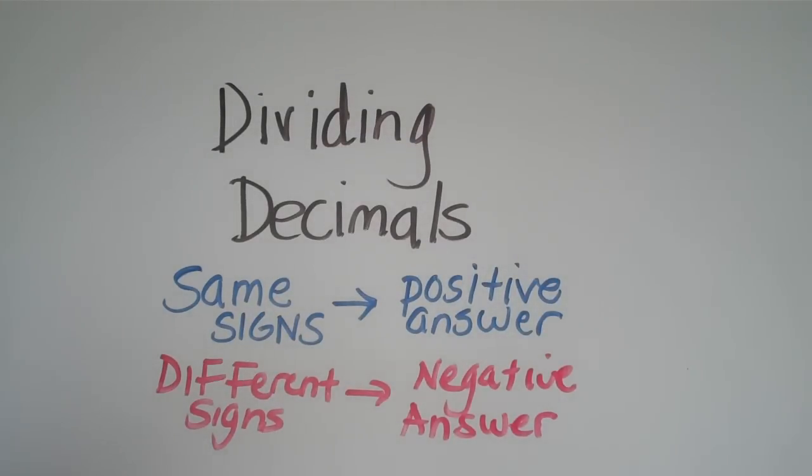Let's talk about dividing decimals. Just like with multiplying decimals, the rules for multiplication and division are the same. If you have the same signs, you will get a positive answer. If you have different signs in the original problem, you will get a negative answer.